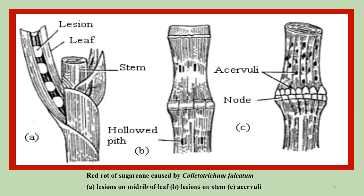Red rot of sugarcane is caused by Colletotrichum falcatum. In the first diagram, lesions are shown on the mid-rib of the leaf. In diagram B, lesions are shown on the stem. In diagram C, acervuli formation is shown at the nodal region.